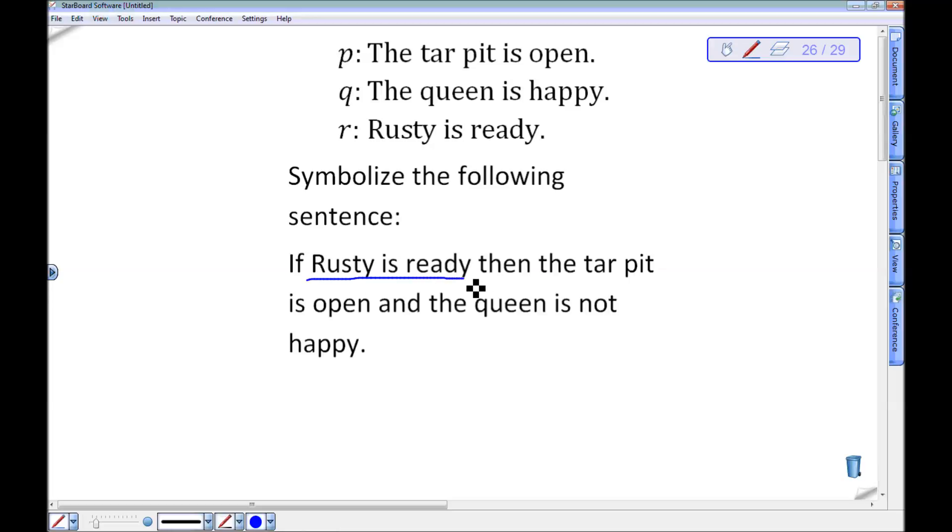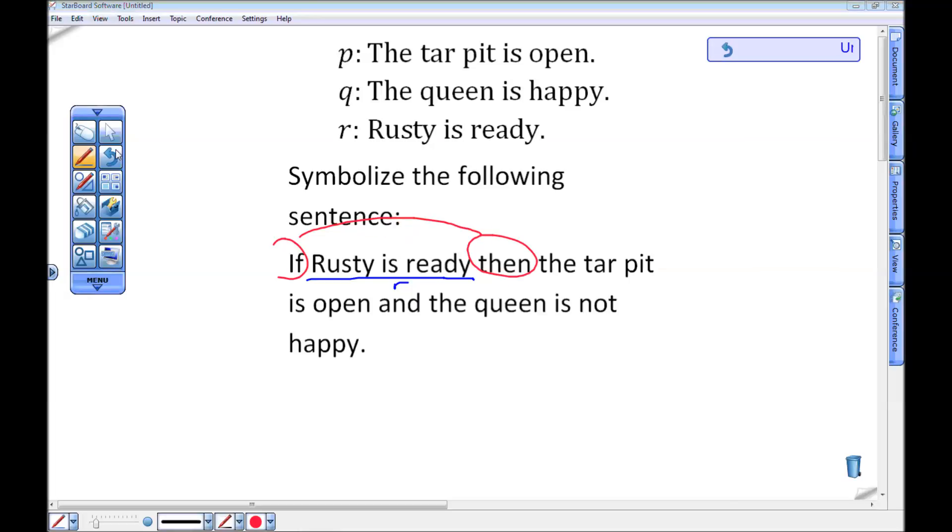So I have Rusty is ready is the statement R. I have an if then around it, so I'm going to have an arrow following. So really that arrow should be over here. I'll just erase everything. That'll make it clear what I'm trying to say. Okay, so I should have an arrow here. There we go. The tar pit is open. Let's see. The tar pit is open is the statement P, and is a conjunction. The queen is not happy. The queen is not happy is the negation of Q.